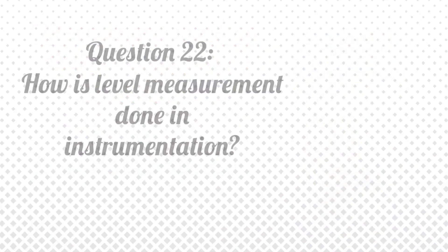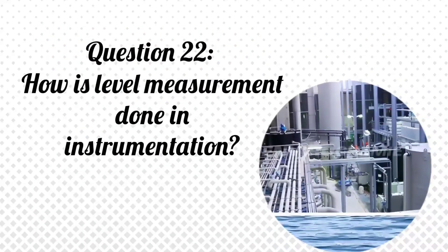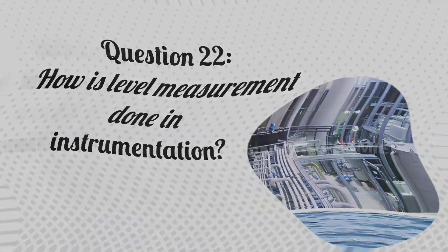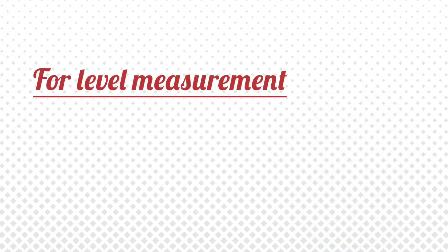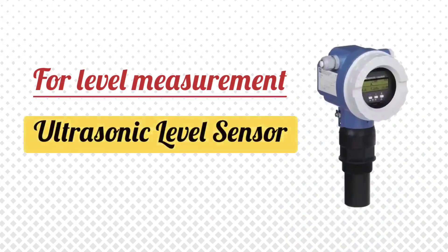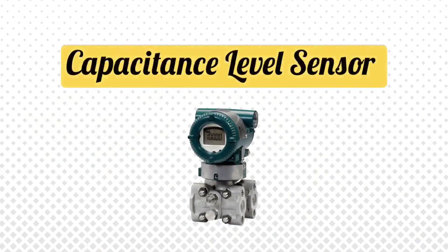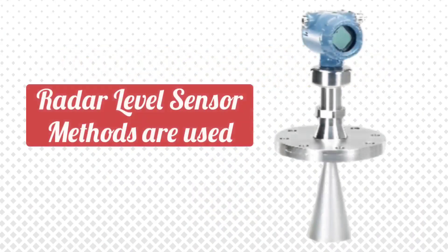Question 22: How is level measurement done in instrumentation? Answer: For level measurement, ultrasonic level sensors, capacitance level sensors, and radar level sensor methods are used.